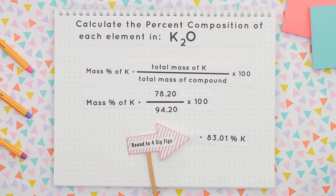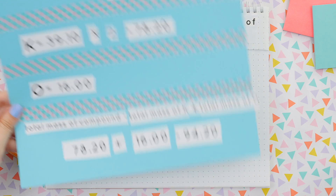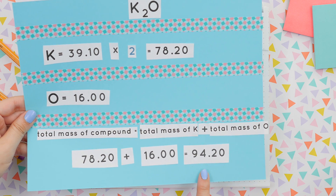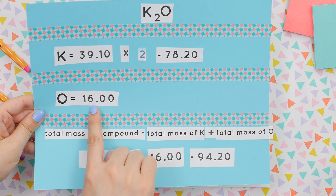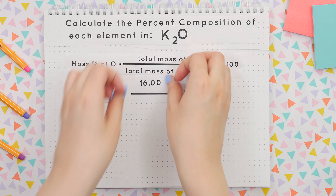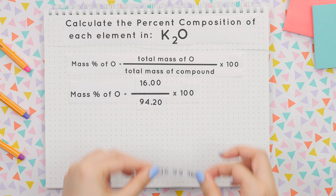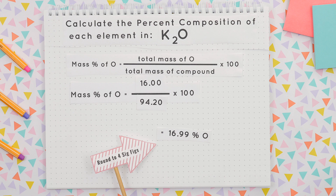We still need oxygen's percent composition, so let's set that up. We previously found the total mass of the compound, and we also know the total mass of oxygen is 16.00. Now let's divide both of those values and then multiply by 100 to get our percent composition of oxygen, rounded to 4 sig figs.